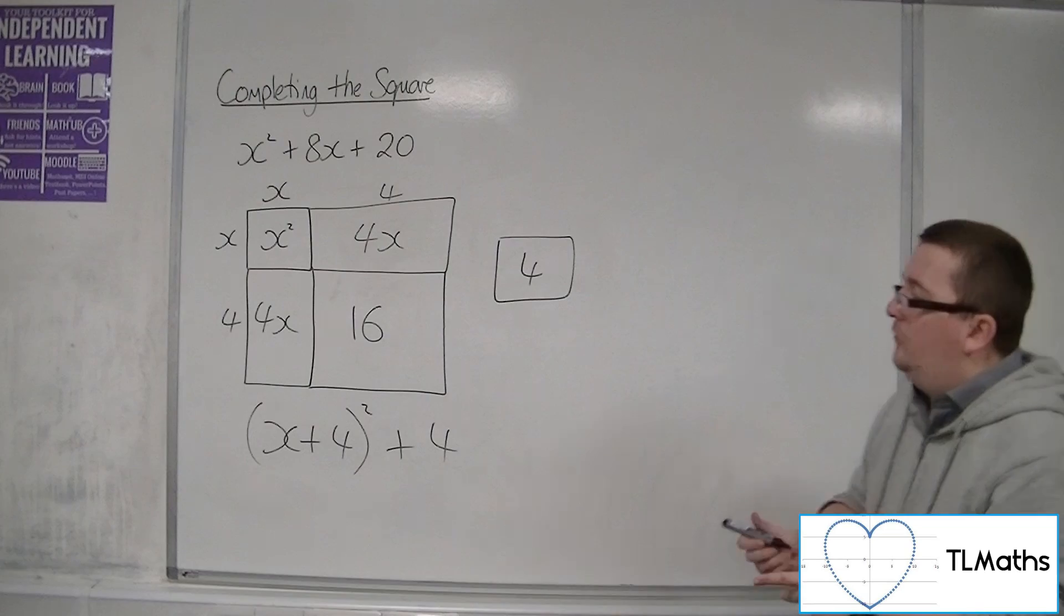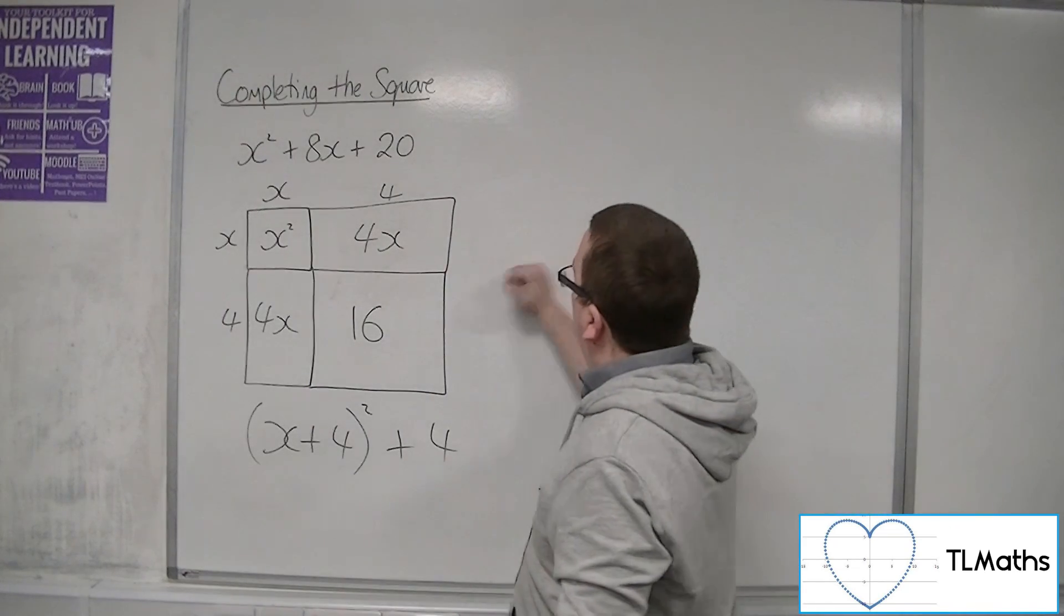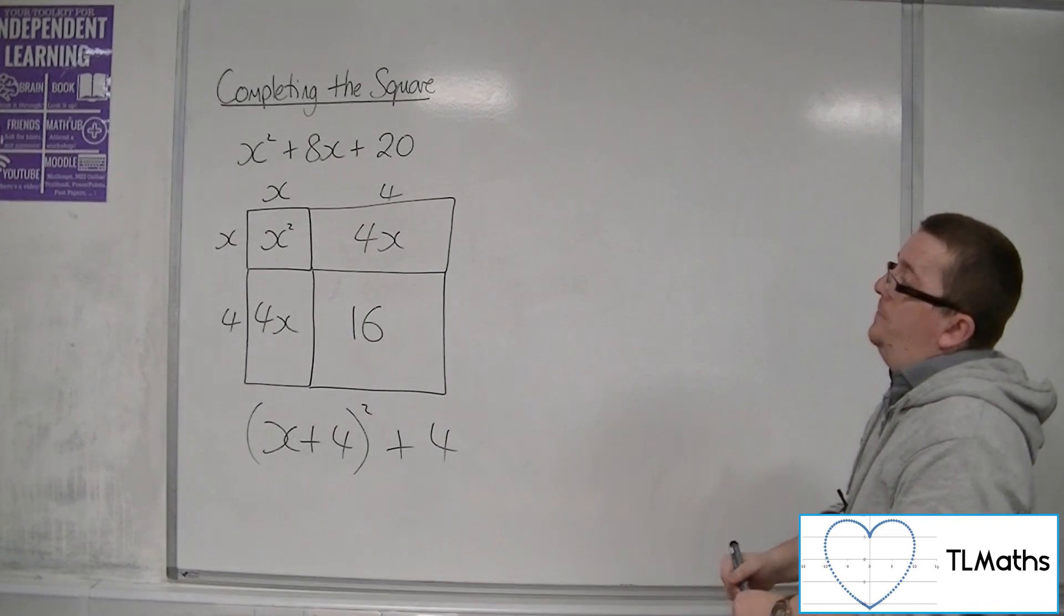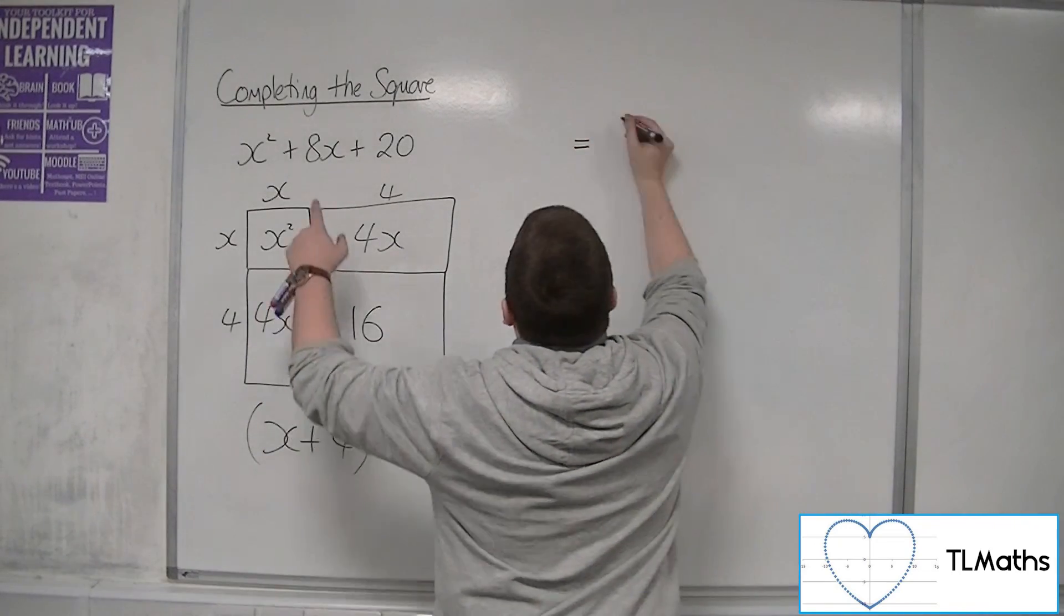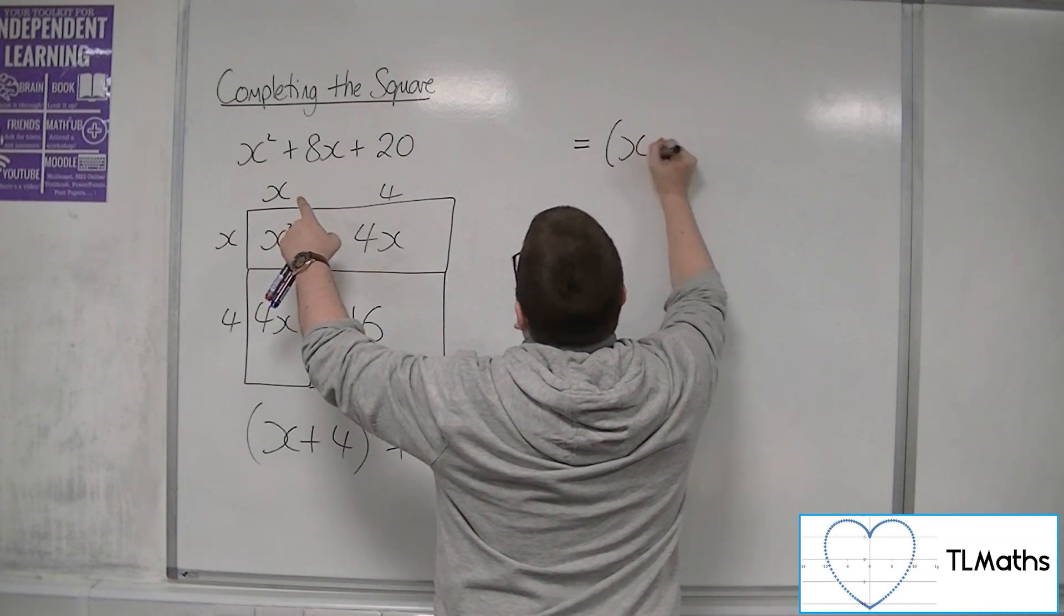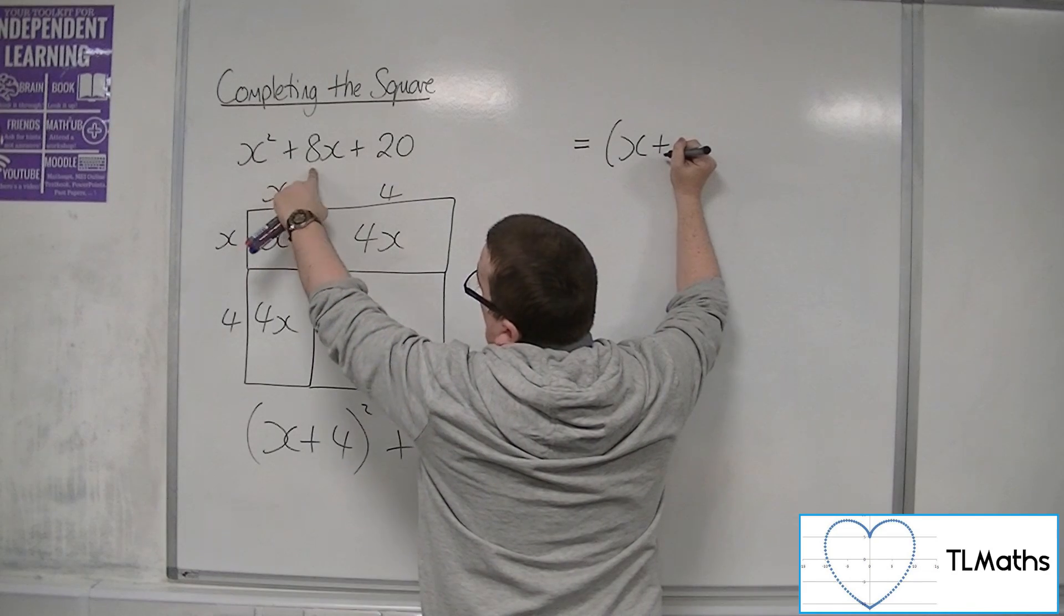Now, in practice, we don't draw a diagram to go with it. So what we do instead is we go through the process of saying, well, we're going to open up a bracket and have x plus half of this number. So half of the 8 is 4.